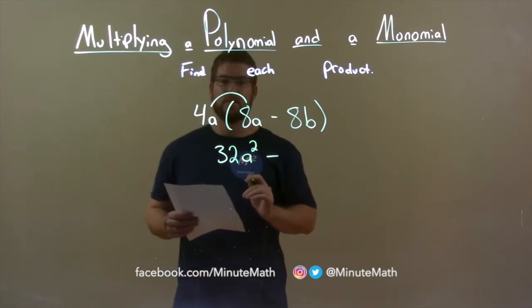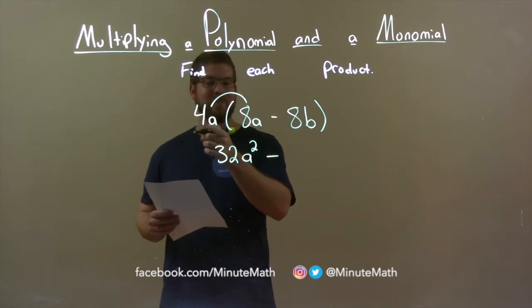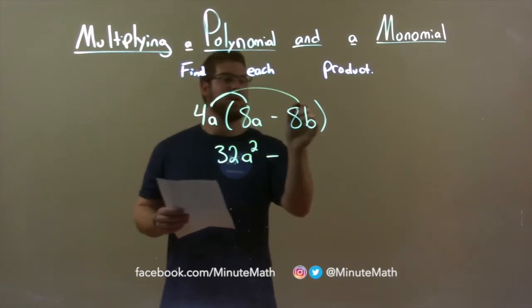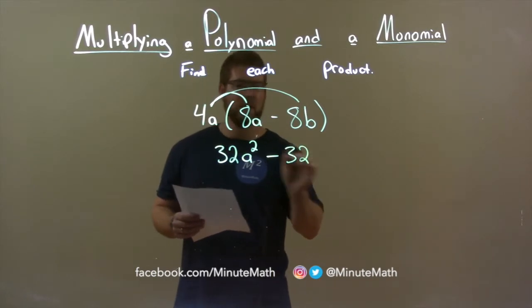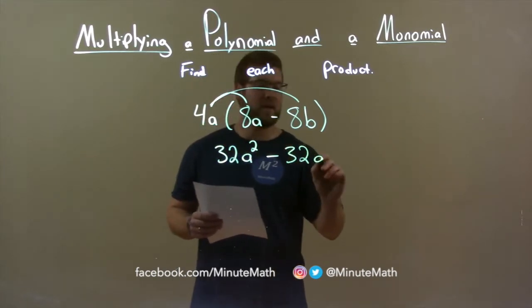Subtraction separates the two here, and we now need to multiply 4a times 8b. Again, look at the coefficients, 4 times 8, 32, and a times b is ab.